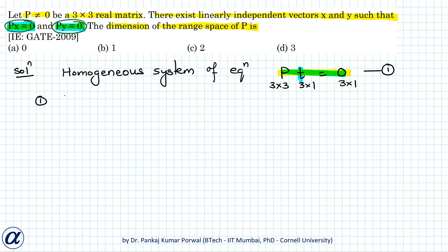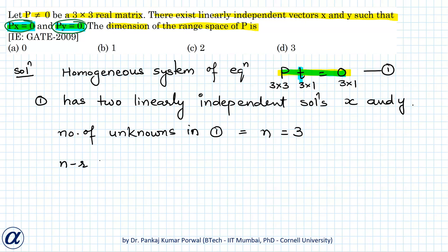So equation 1 has two linearly independent solutions, x and y. And because the matrix P is of size 3 by 3, the number of unknowns in our equation 1 is 3. And we know that for a homogeneous system of equations there are n minus r linearly independent solutions.